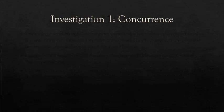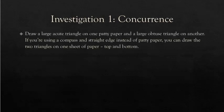Our first investigation is going to look at special lines in a triangle that will have points of concurrency. We're going to investigate each set of lines on an acute triangle and an obtuse triangle. If you want, you could even do a right triangle. If you're using a compass and straight edge instead of patty paper, you might draw the two triangles on one sheet of paper top and bottom. Otherwise, you're going to want a different piece of patty paper for each triangle.